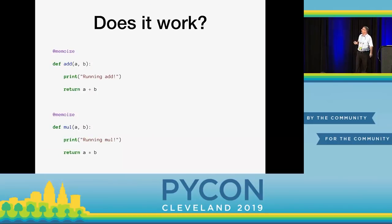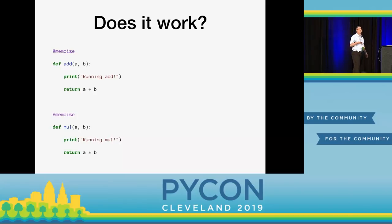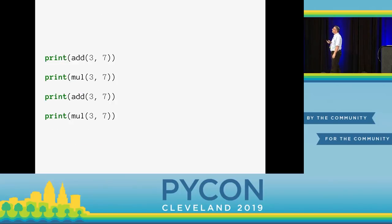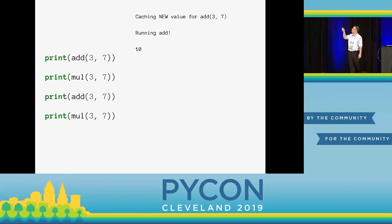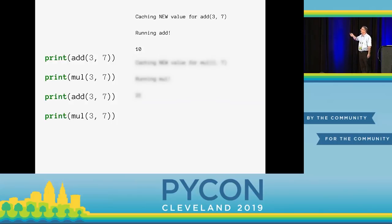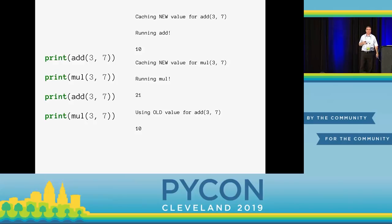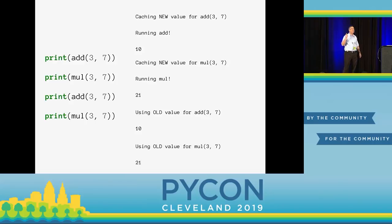Let's check it: memoize on add and multiply. My add and multiply functions announce when they're running. I say add(3, 7) and mul(3, 7), each twice. The first time, memoize notices it hasn't seen these arguments before, so it runs the function and gets the result back. The second time I run add, it says wait — I already have that result — so it sidesteps the function altogether. Same for mul. Notice: even with identical arguments, because add and multiply are separate functions with separate decorators, their caches are completely separate and don't step on one another.